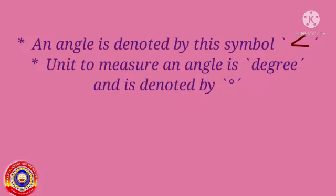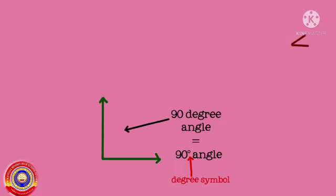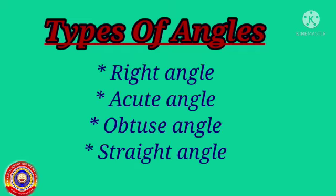The unit used to measure an angle is degree, and is denoted by a small circle symbol. This degree symbol is placed at the top right corner of the number or the measurement you have taken. Here is a 90 degree angle, and the 90 degree is shown like this.